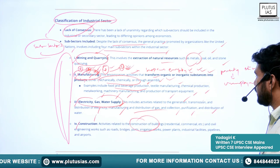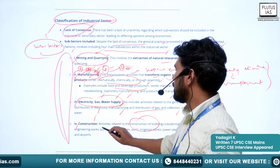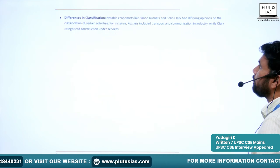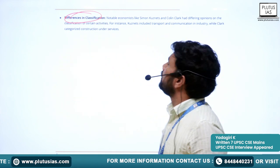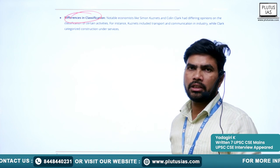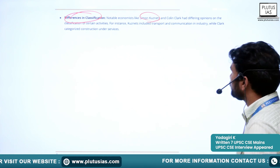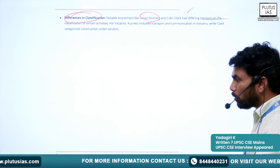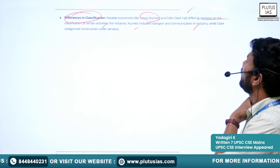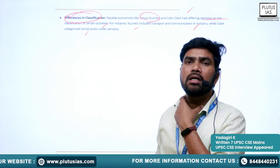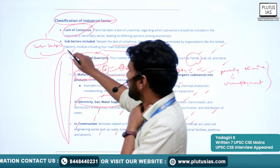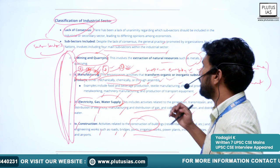The fourth sub-sector is construction — activities related to construction of buildings (both residential and commercial) and civil engineering works such as roads, bridges, ports, and irrigation works. There are differences in classification: economists like Simon Kuznets and Colin Clark have differing opinions — Kuznets includes transport and communication in industry, while Clark categorizes construction under services. Despite this debate, try to remember these four sub-sectors of the industrial sector.